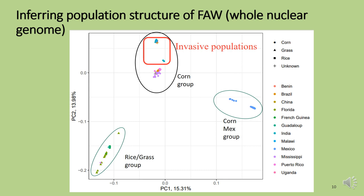In the results, PC1 on the x-axis shows three groups: the first being the rice group from the Caribbean Sea, including countries like Florida, French Guiana, and Guadeloupe; the second being all corn strain individuals from Mexico, shown as the blue dots on the right; and the third being the corn group in the middle. On the y-axis, the corn group is separated into native and invasive populations. In conclusion, the PCA shows that the invasive population is all corn group.